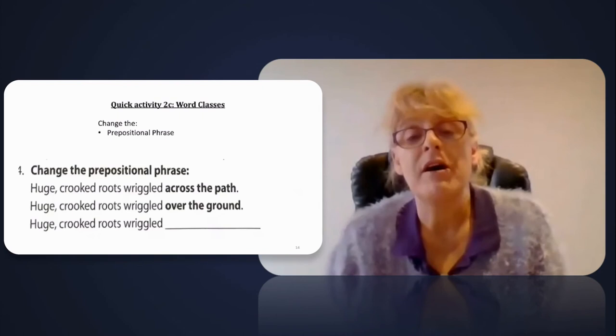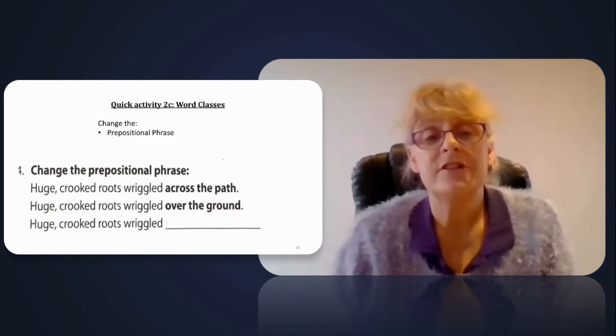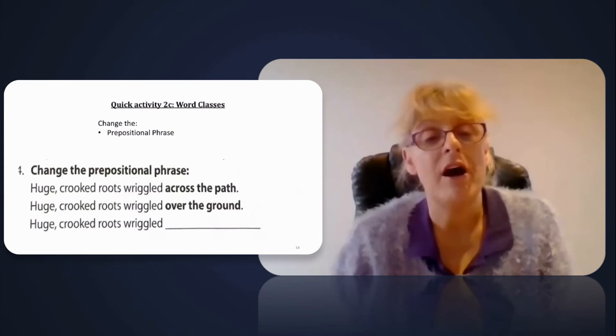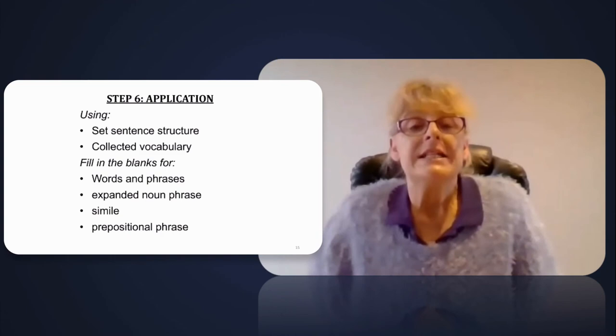And finally, step four: change the prepositional phrase. So across the path could become, for example, over the ground. So from the original sentence, the thick twisted branches spread across the path, we now have huge, crooked roots wriggled over the ground.